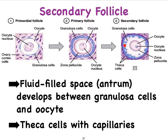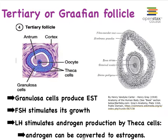When we begin to see multiple layers of cuboidal granulosa cells and a space forming between the oocyte with its zona pellucida and the granulosa cells, that is indicative of a secondary follicle. We refer to that space as the antrum, and it is filled with fluid. Outside of the granulosa cells, theca cells form, and they are very vascularized. This secondary follicle is going to continue growing.